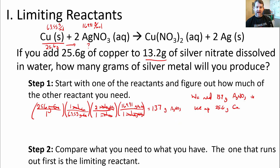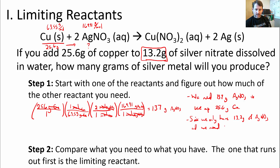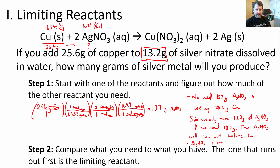What this number tells us is we need 137 grams of silver nitrate to use up 25.6 grams of copper. The question we must ask: do we have 137 grams? If we have that or more, we have plenty. If we have less, we don't have enough silver nitrate. Sure enough, we only have 13.2 grams — that means we don't have enough silver nitrate, and it's going to run out. Since we only have 13.2 grams and we need 137 grams, the silver nitrate will run out before the copper. This means silver nitrate is our limiting reactant.